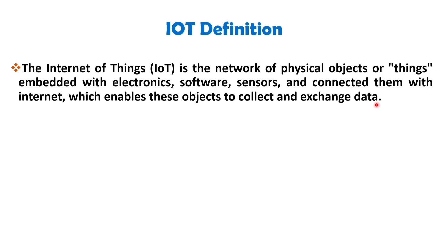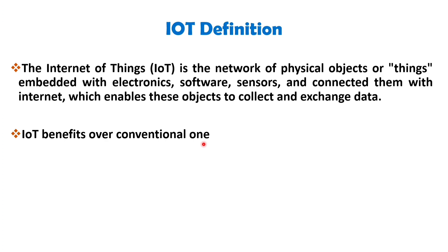What advantages does IoT offer over conventional systems? IoT enables remote sensing, monitoring, and control of objects across existing network infrastructure. These create opportunities for direct integration between the physical world and computer-based digital systems, leading to improved efficiency, accuracy, and economic benefits.